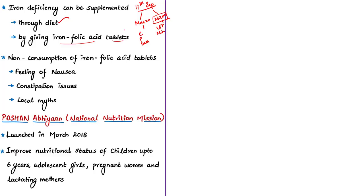Some local myths in the community suggest consuming these tablets would cause death or make women incapable of conceiving. This news article also mentions POSHAN Abhiyan. POSHAN Abhiyan — the National Nutrition Mission — is India's program launched in March 2018. Its main aim is to improve the nutritional status of different population sections: children up to 6 years, adolescent girls, pregnant women, and lactating mothers.